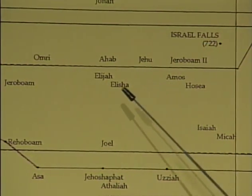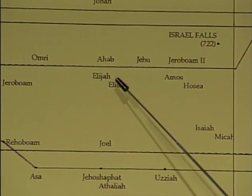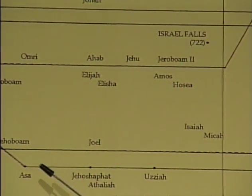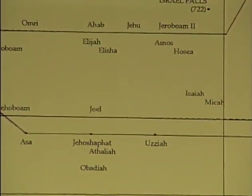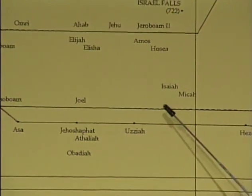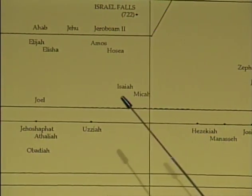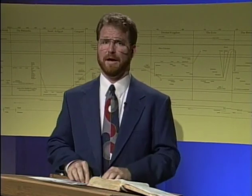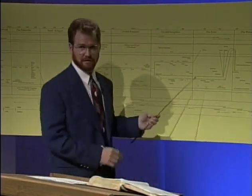Prophets came on the scene in the north — like Elijah, who confronted the prophets of Baal, along with Elisha, Amos, and Hosea. In the south we had kings like Asa, Jehoshaphat, Uzziah, Hezekiah, and Josiah, and prophets like Isaiah, Micah, and Obadiah. At the end of the divided kingdom period, the prophets warned the north: if you don't straighten up your act, God is going to deal with you. And the north was dealt with by Assyria — the kingdom divided in 930 BC, and in 722 BC Sargon II of Assyria came down and took Israel out.